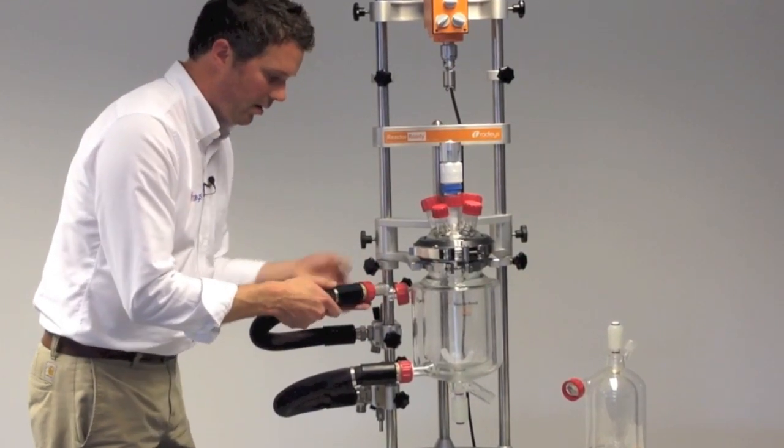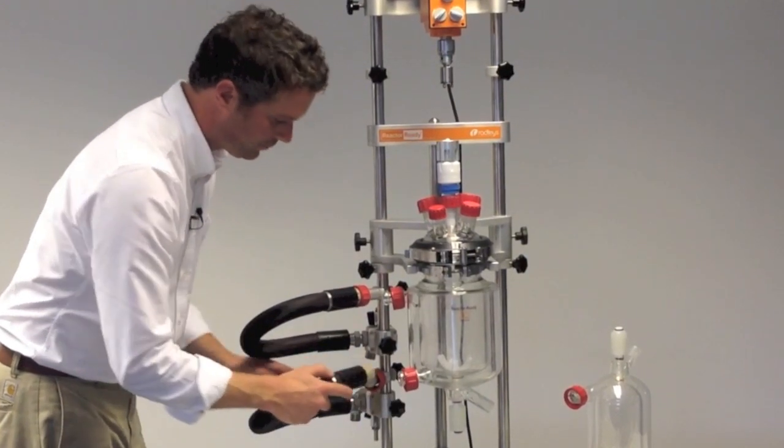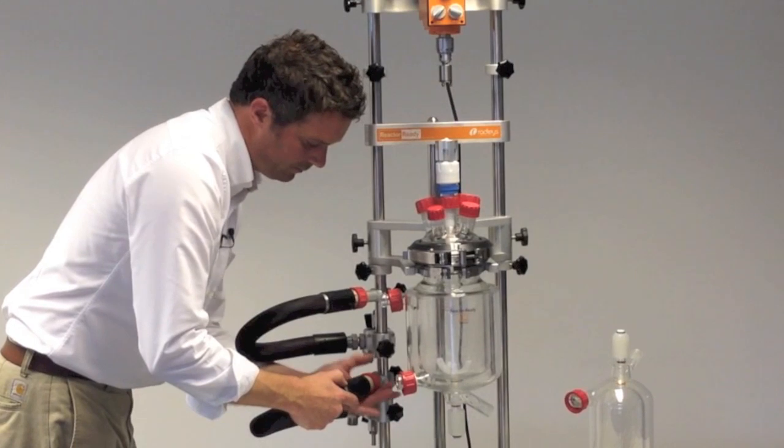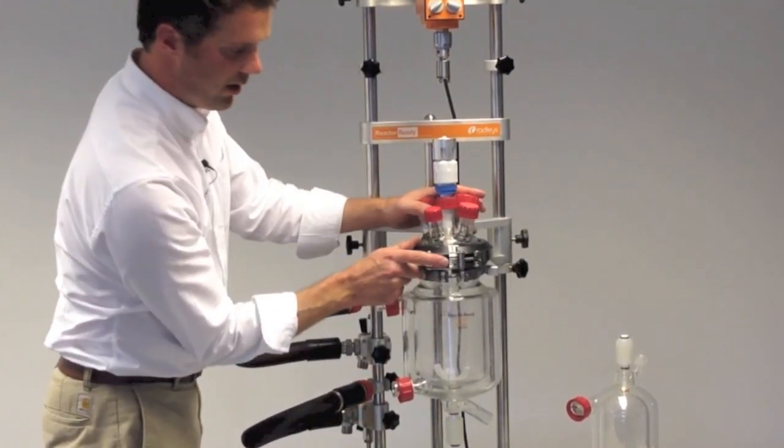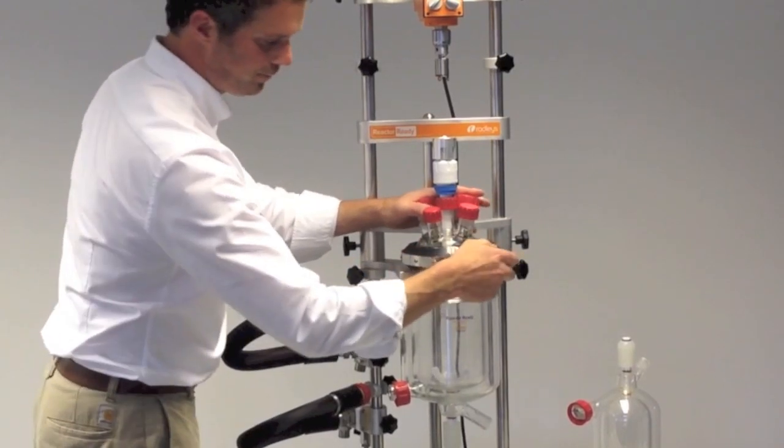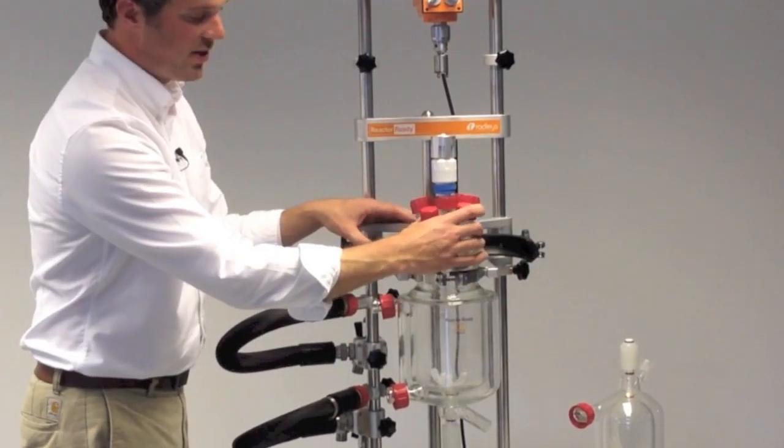I'll just pop this onto the hose tidy. It just keeps hoses out of the way whilst you're changing vessels. Then we're free to take the lid off and undo the quick release pad. All of the vessels share the same lid.